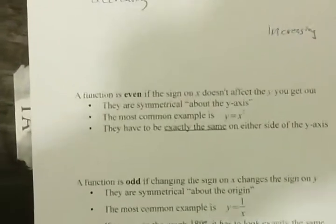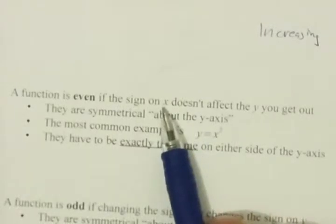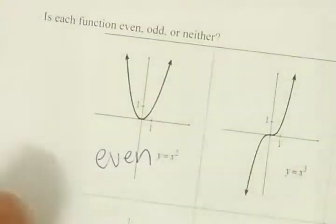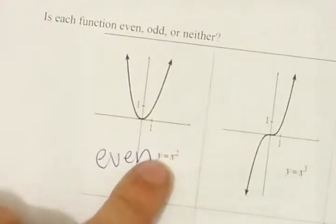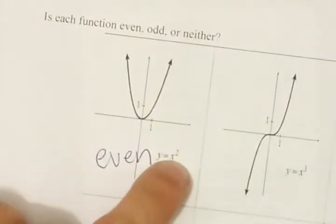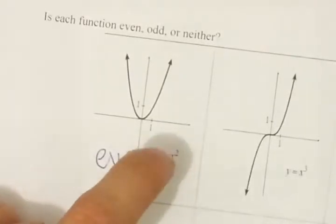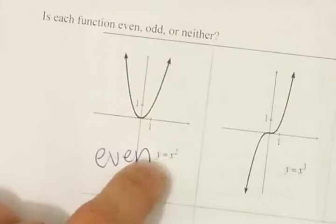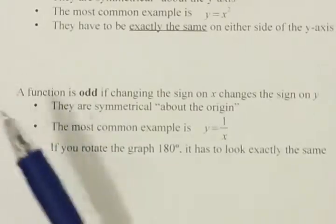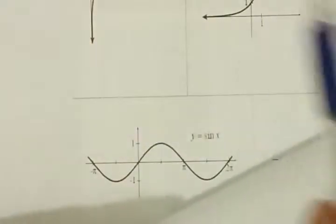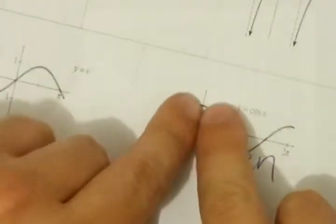What that practically means is that it doesn't really matter if you're plugging in a positive or negative value of x. An example is y equals x squared. If I plugged in positive 3, 3 squared is 9. If I plugged in negative 3, negative 3 squared is also 9. The value of y has nothing to do with the sign on x — that's what makes something an even function. All I want you to really know is that even functions are symmetrical like this — perfectly the same on both sides.